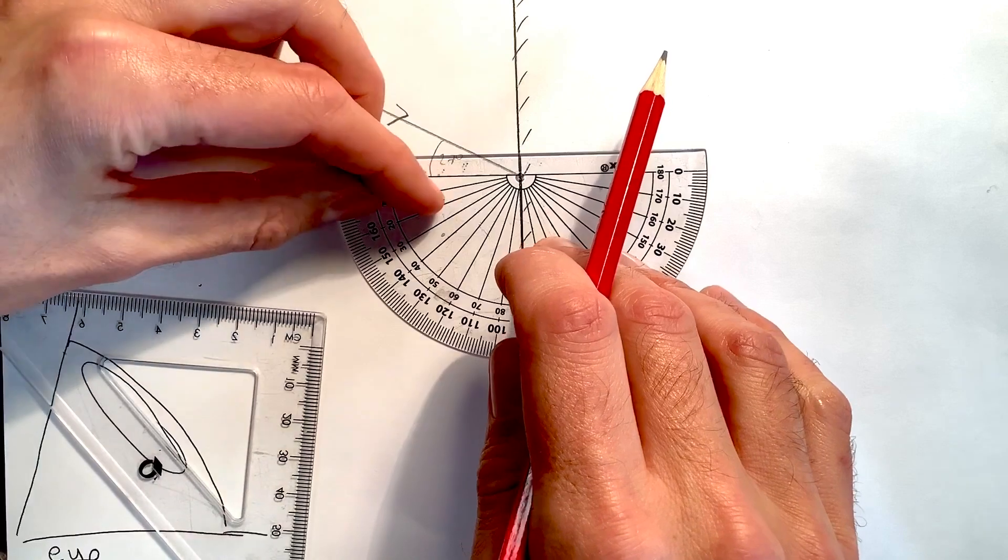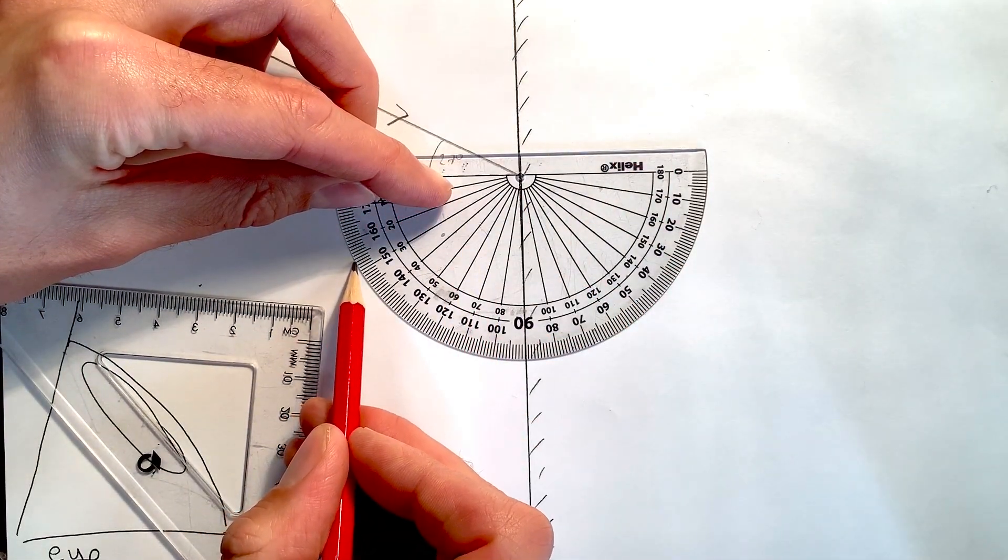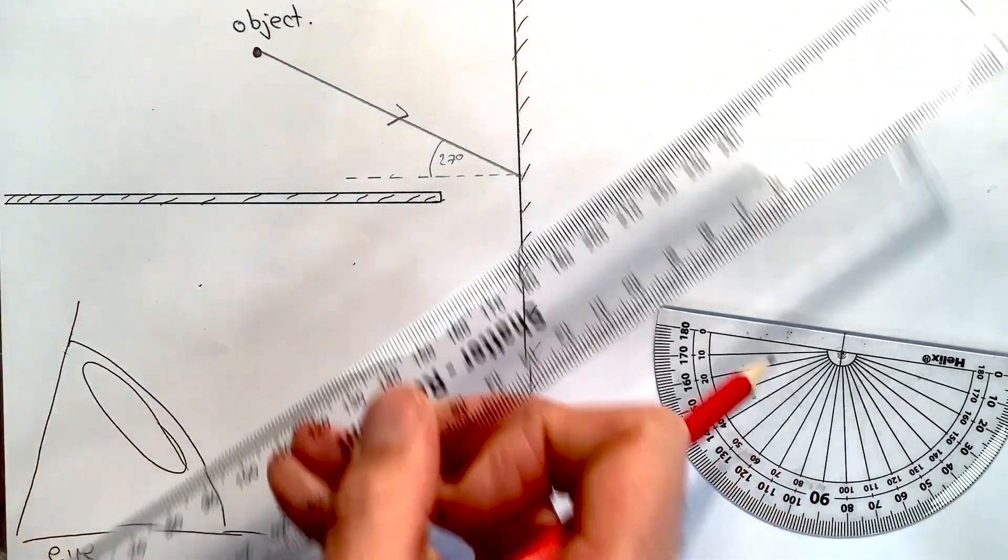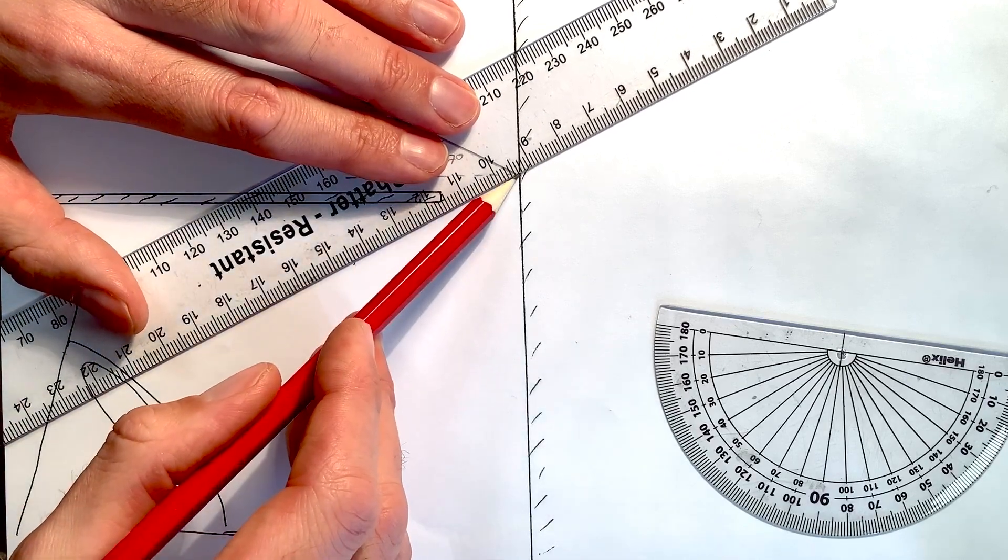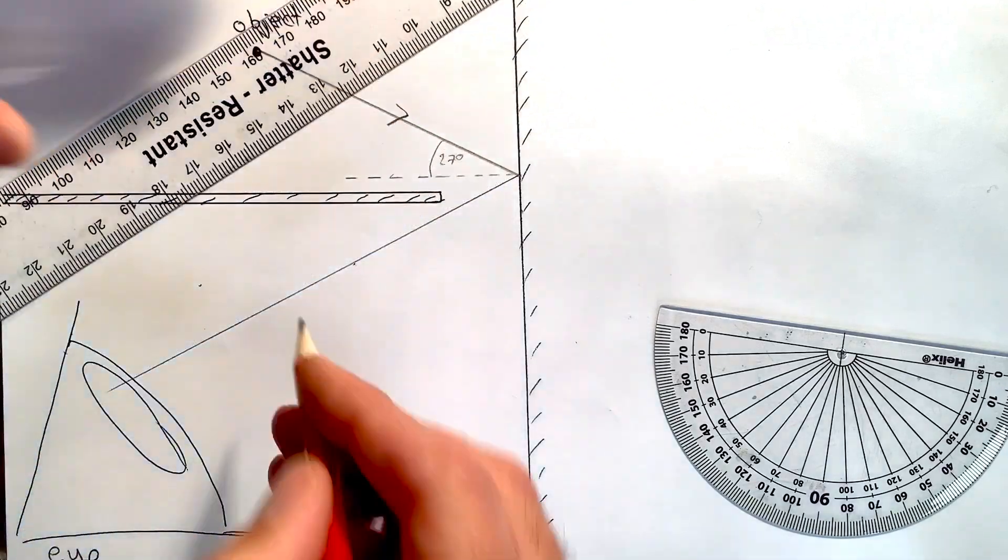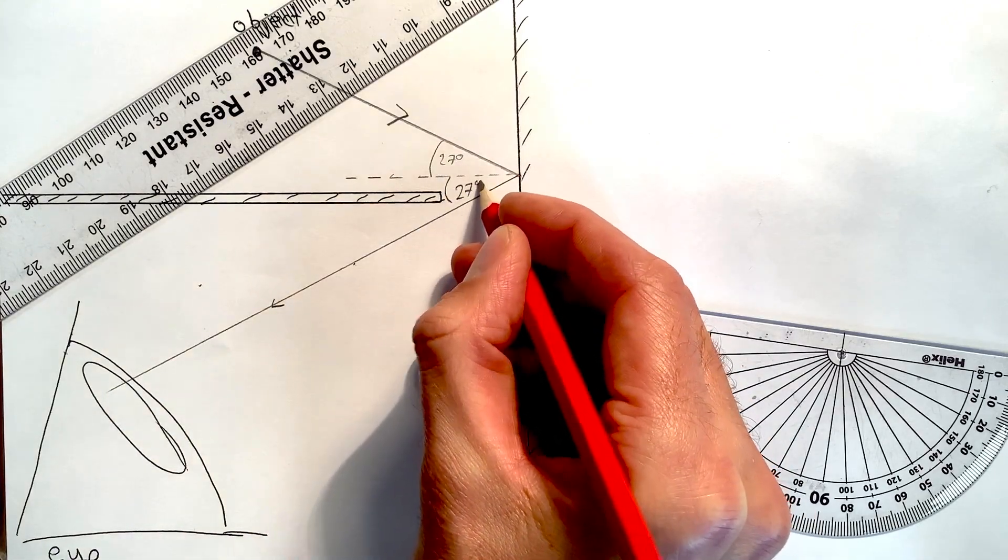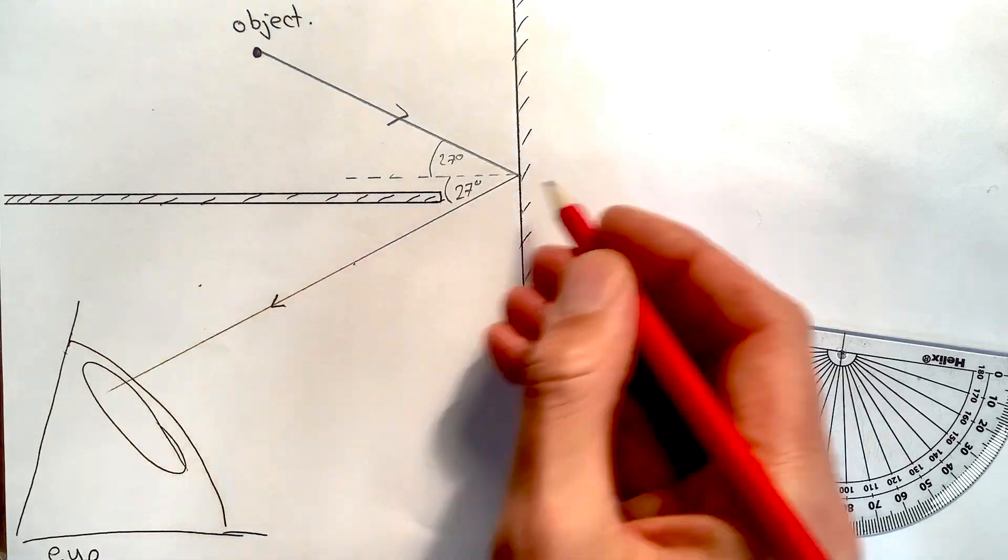So then I need to read off my 27 degrees, which will be at this point here. And now I can draw in my reflected ray passing through that point there. That has ensured that I have an angle of reflection equal to 27 degrees as well, and I've put an arrow on that to show it's going that way.